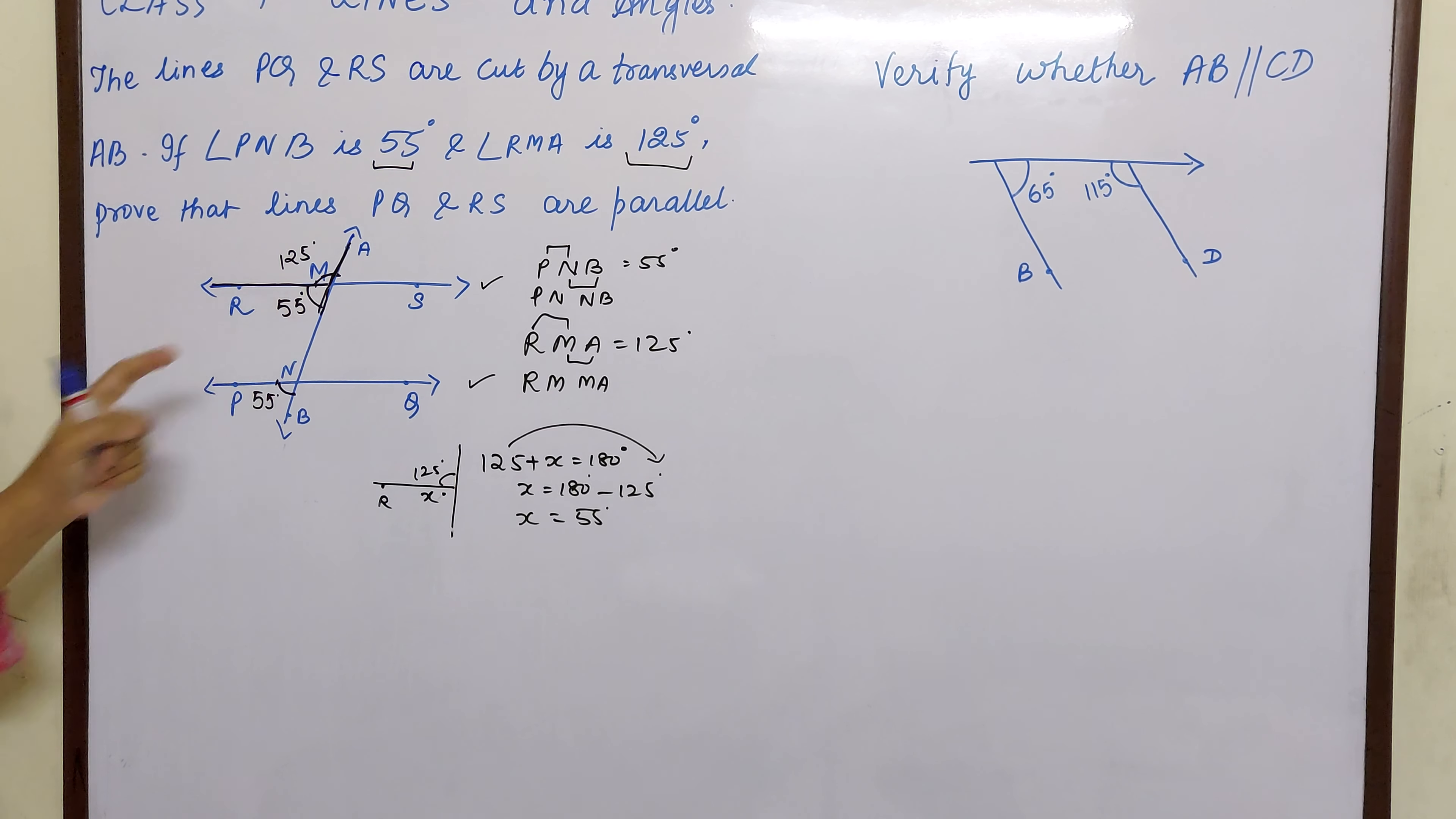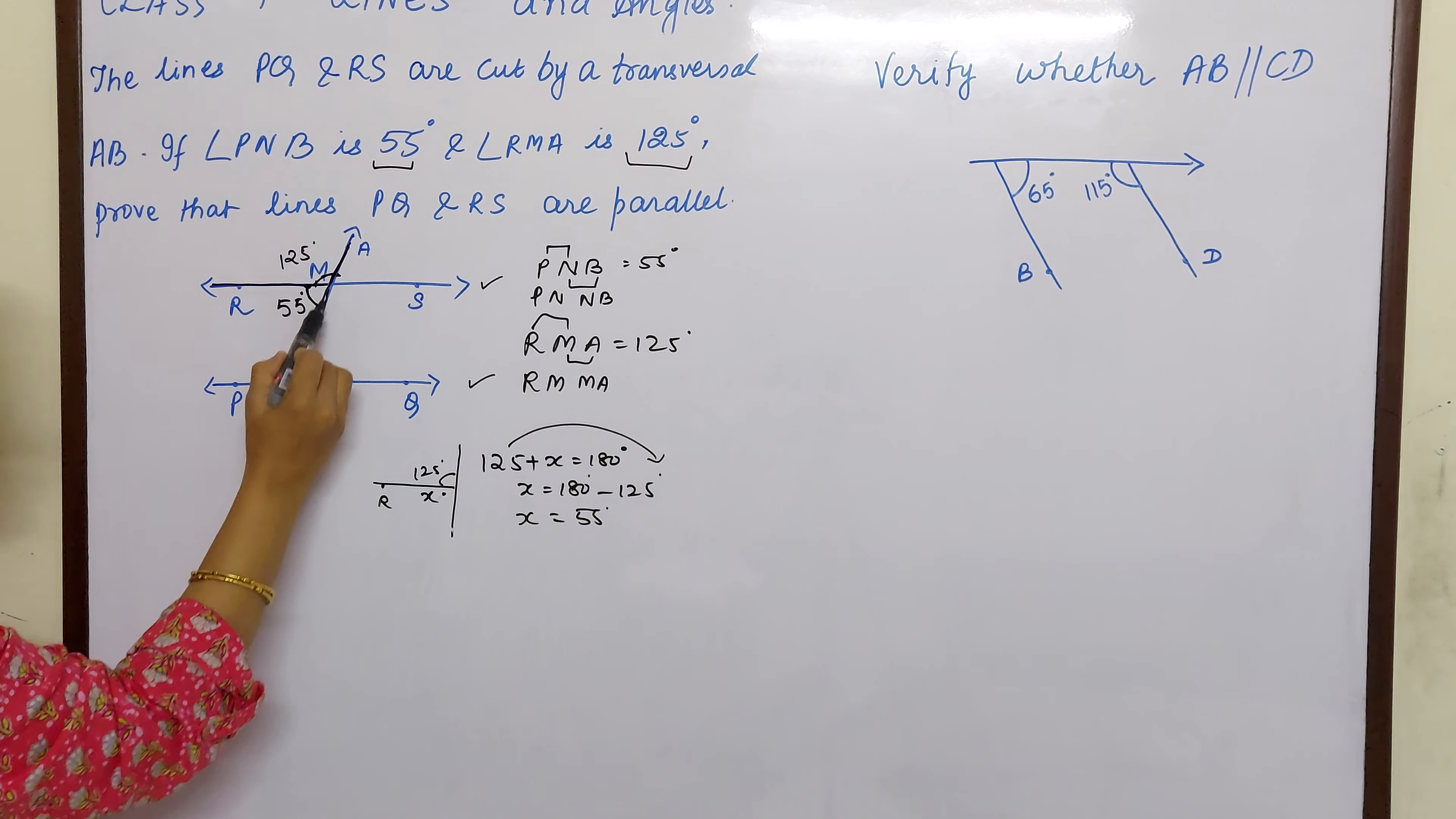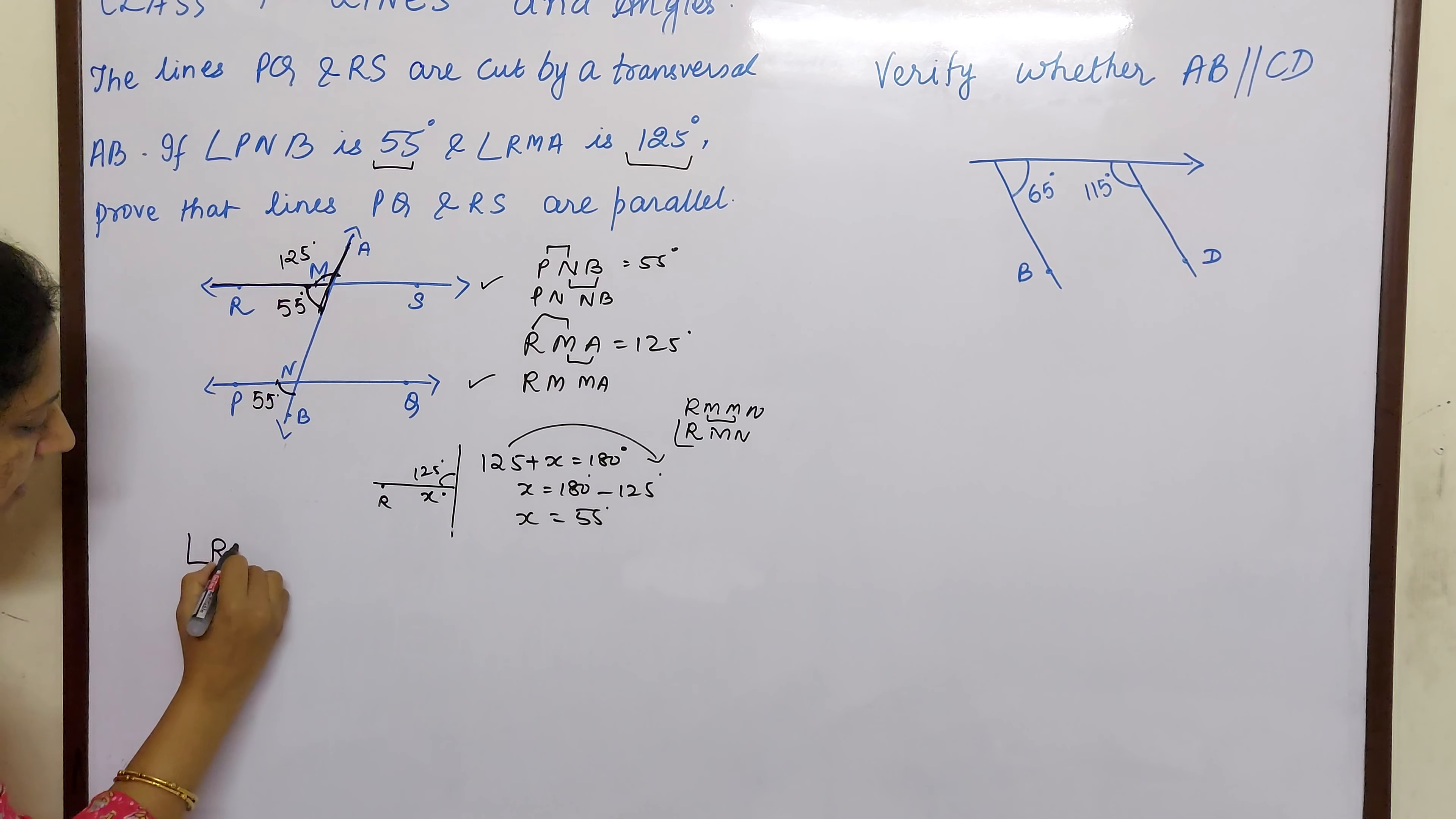Now let us name this. What is this 55? Let us name it. Name the angle. Now where is it joining children? R, M. And this is joining M, N. R, M, and M, N. So what is this angle name? Angle R, M, N. Correct? So angle RMN equal to 55.